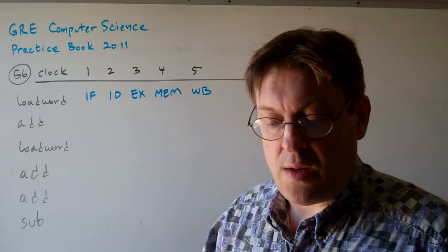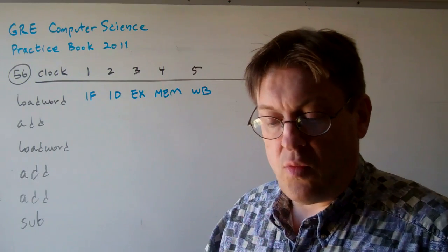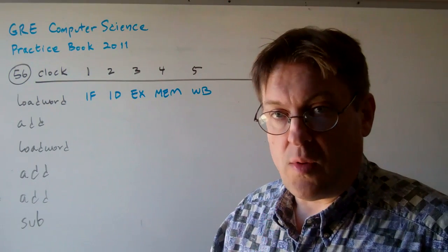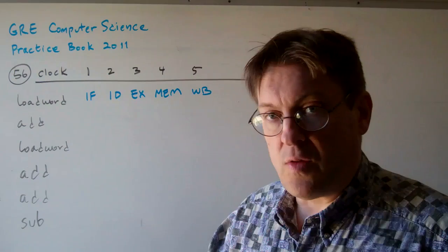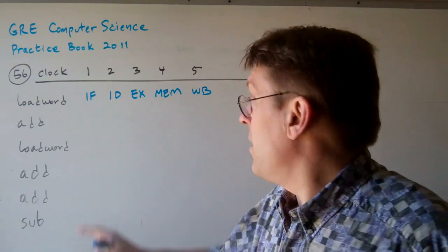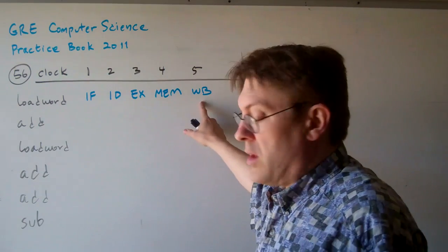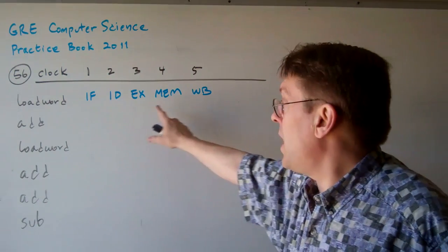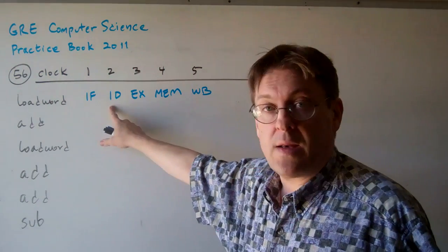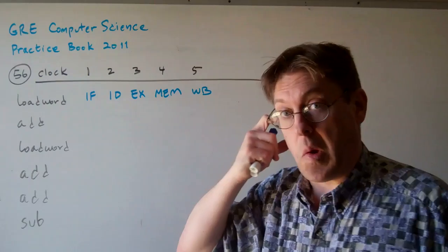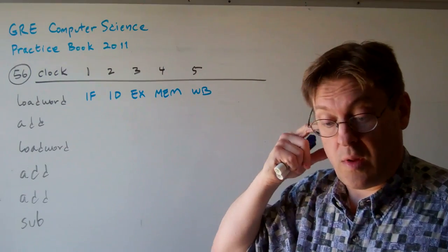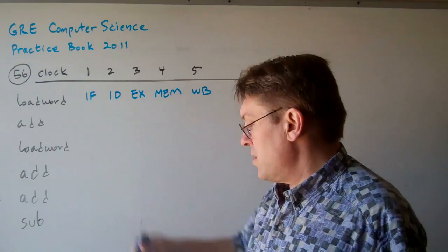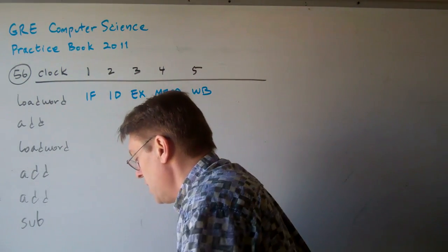When it says the register file can be written and then read in the same cycle, that means the write back can take place at the same time as the ID stage, because that's where the reads take place. So that's basically what you need to know.